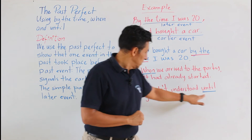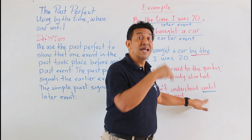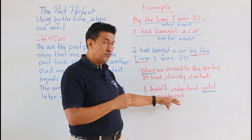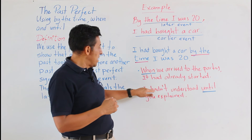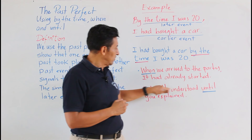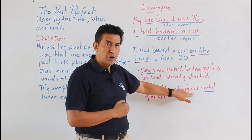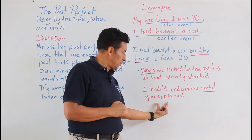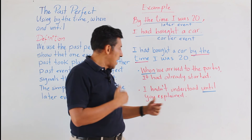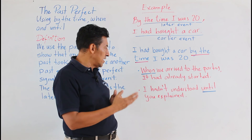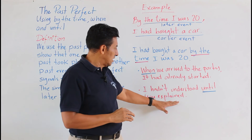Now let's read the last one using 'until': 'I hadn't understood until you explained.' This one is the earlier event in the past perfect form, and 'you explained' is the simple past — the later event.